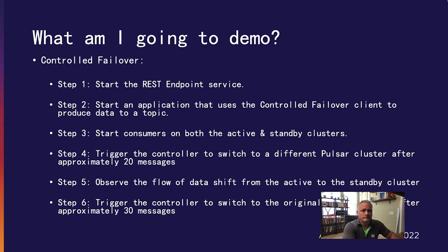For the controlled failover demo, I first need to start the REST endpoint service. Next, I'll start an application using the controlled failover client to produce data to a topic. As before, I'll start consumers on both the active and standby cluster windows to observe in real time where data is being published. Then, using the code shown earlier, we will trigger the controller to switch to a different Pulsar cluster after approximately 20 messages. We should observe the data shift from the active to the standby cluster. After a total of 50 messages, the controller will trigger the flow back to the original active cluster, demonstrating that you can dynamically switch back and forth — it's not a one-way operation.